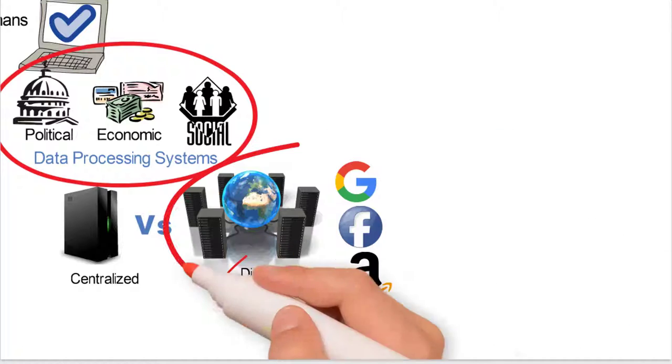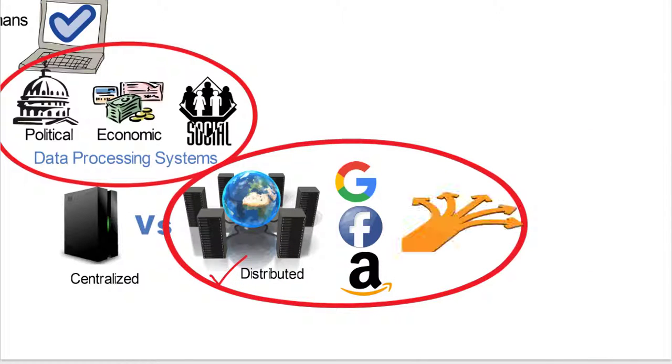So what we're seeing is that Google, Facebook, and Amazon are basically distributed systems that are going to be making the decisions for us using their sophisticated algorithms. And that's one of the possible futures.